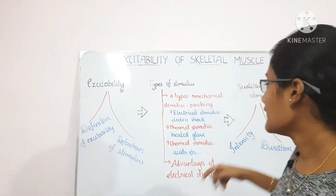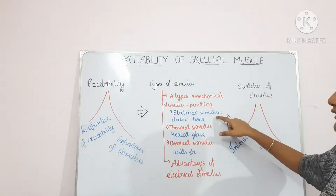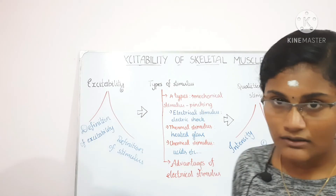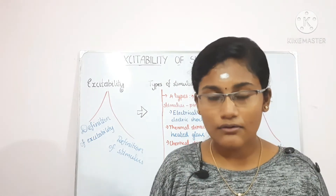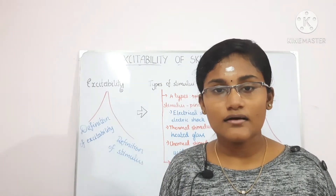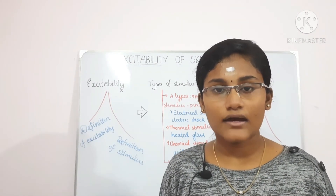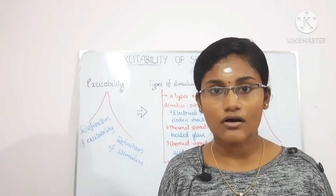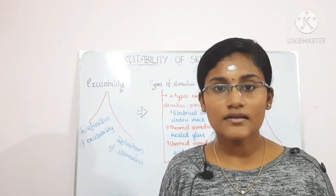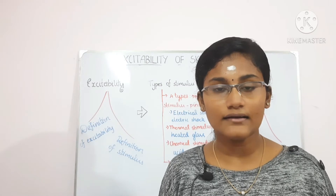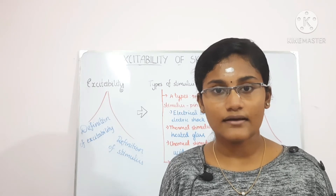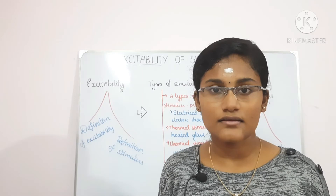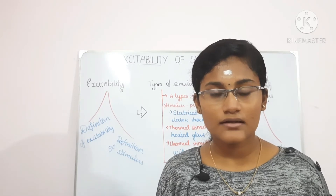There are four types of stimulus: mechanical stimulus, electrical stimulus, thermal stimulus, and chemical stimulus. The mechanical stimulus example is pinching; electrical stimulus is giving an electric shock; thermal stimulus is putting a heated glass rod on the hand; and chemical stimulus example is acids.